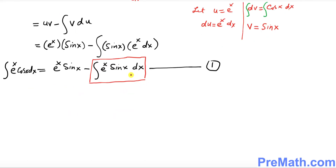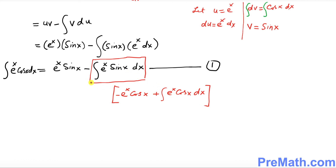We're back to our original Equation Number One. We just found the value of that integral. Substituting it in: the integral part equals negative e^x·cosine(x) plus the integral of e^x·cosine(x) dx. Putting this into Equation One gives us e^x·sine(x) minus that whole expression.